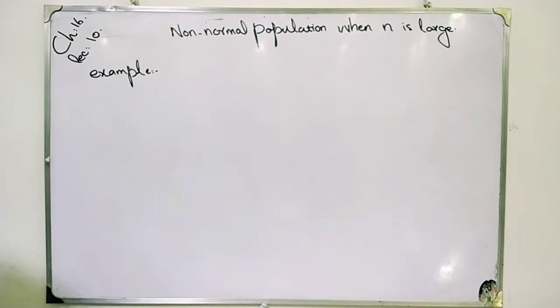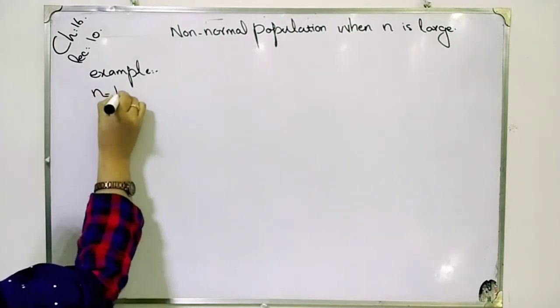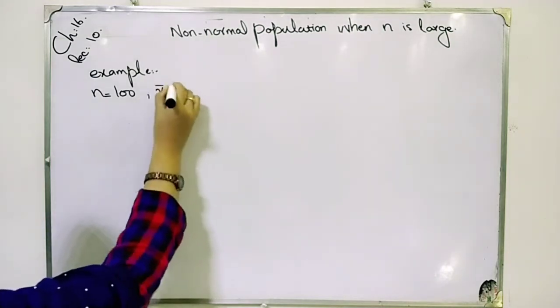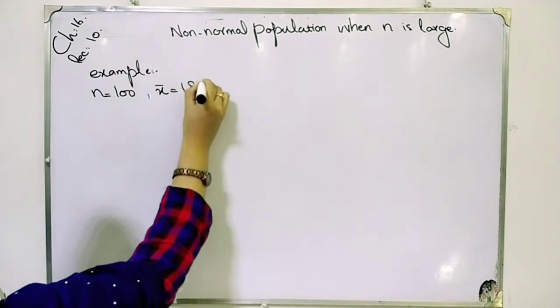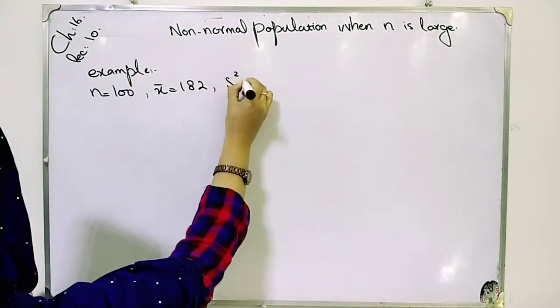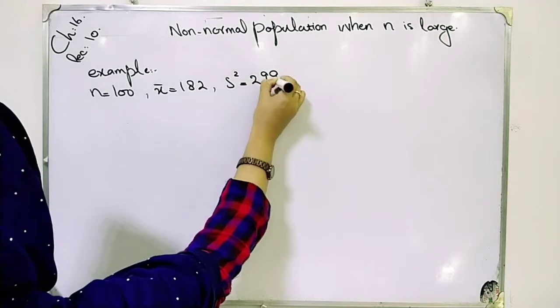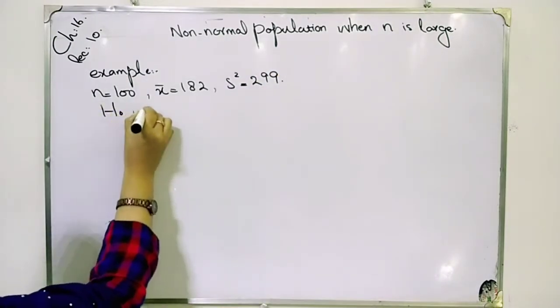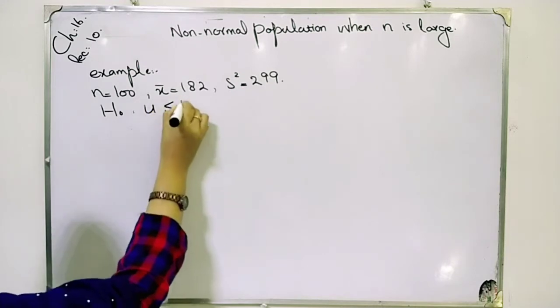What is the example? A random sample of 100 observations from a population known to be non-normal yielded the sample values x̄=182, standard deviation s²=299, and test the hypothesis with alternative hypothesis and null hypothesis given.